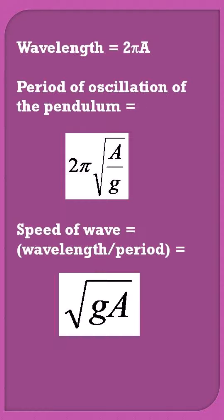The speed of wave can be evaluated by the formula wavelength by period, which comes equal to √(ga). This is what Newton tells should be equal to the speed of sound.